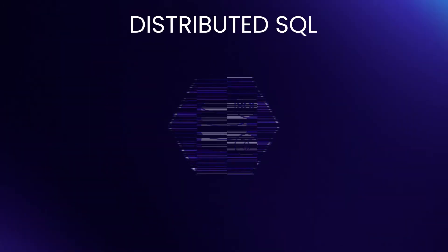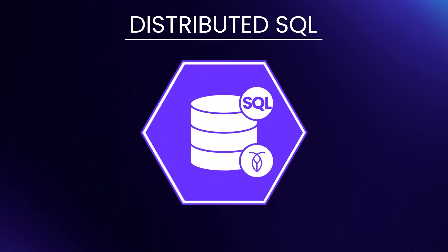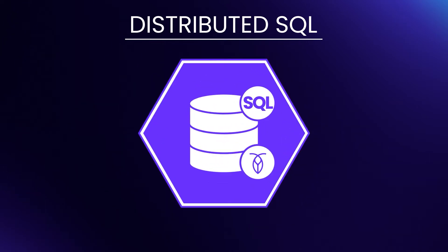Let's dig into that a bit more. What does a database need, exactly, to qualify as distributed SQL? First, it's got to be distributed, which is to say it has to scale, and do so seamlessly. This is where legacy SQL databases really fell short. That's not to say they can't scale — one can shard a Postgres database, and people do, but it's a lot of extra work and it comes with compromises.